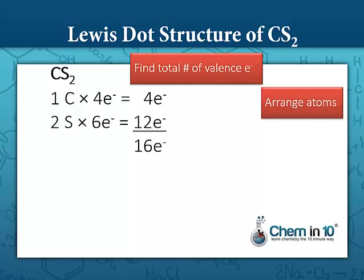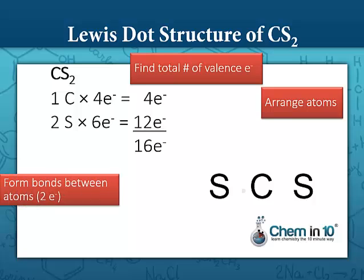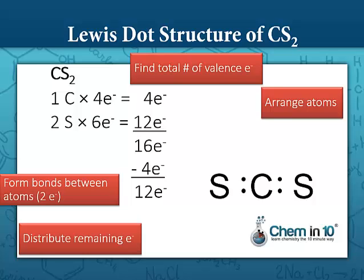We then arrange the atoms with the singular atom, the carbon in the middle, and we draw our bonds. Remember, each bond consists of two electrons. So now we've used up four electrons altogether, and we have 12 electrons left over. Remember we're going to distribute the remaining electrons so that each atom has a full outer shell, 8.